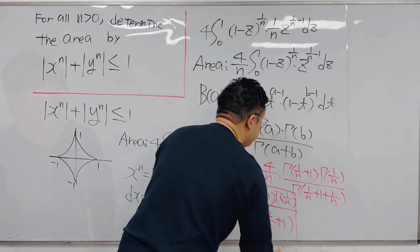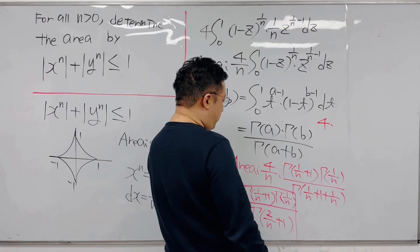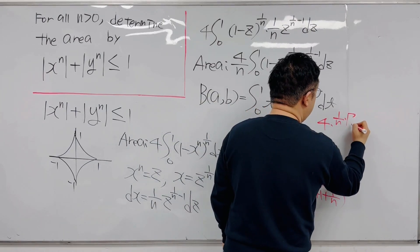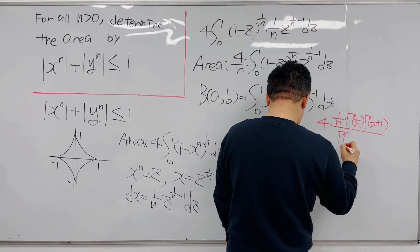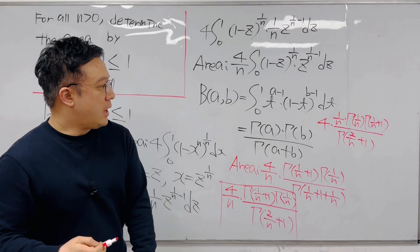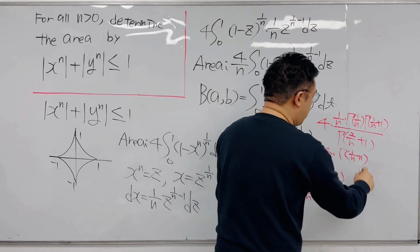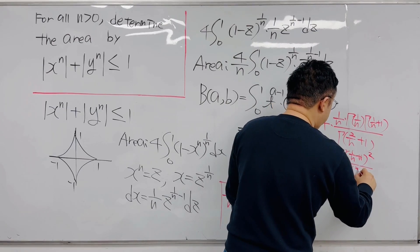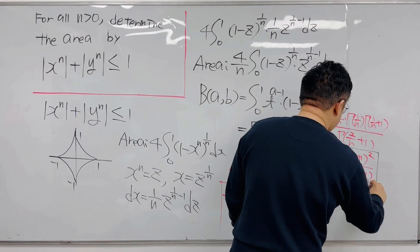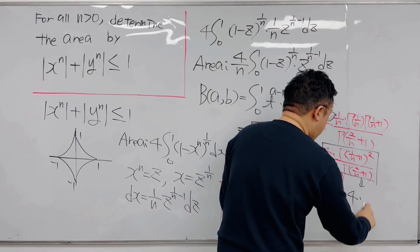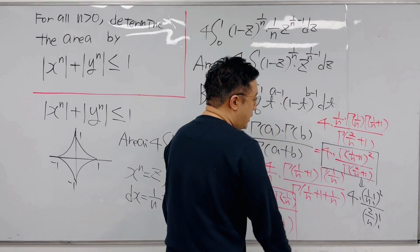This is our expression. We can rewrite it as 4 × (1/n) × Γ(1/n + 1) / Γ(2/n + 1), which is also equal to 4 × [Γ(1/n + 1)]² / Γ(2/n + 1). Using factorial notation, this is 4 × (1/n)!² / (2/n)!.